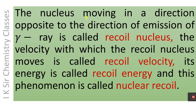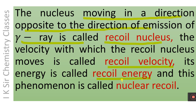The nucleus moving in a direction opposite to the direction of emission of gamma ray is called the recoil nucleus. The velocity with which the recoil nucleus moves is called the recoil velocity, its energy is called the recoil energy, and this phenomenon is called nuclear recoil.